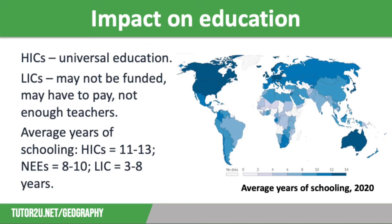Average years of schooling tends to be lower in LICs and NEEs than in HICs, and you can see this variation on the map, which is from Our World in Data. Generally, children in HICs have between 11 and 13 years of schooling, with the highest figures in South Korea at 13.7 years. NEEs tend to have between 8 and 10 years of schooling — for example, China has 9 years and Brazil has 8.